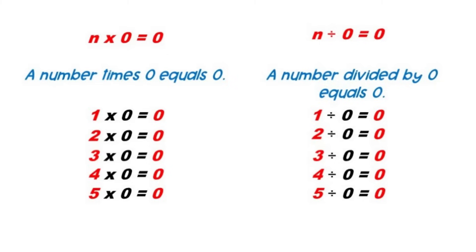The rules of 0. A number times zero always equals zero. A number divided by zero always equals zero.